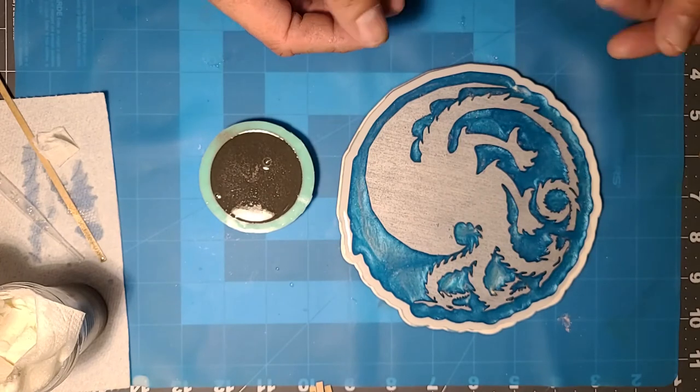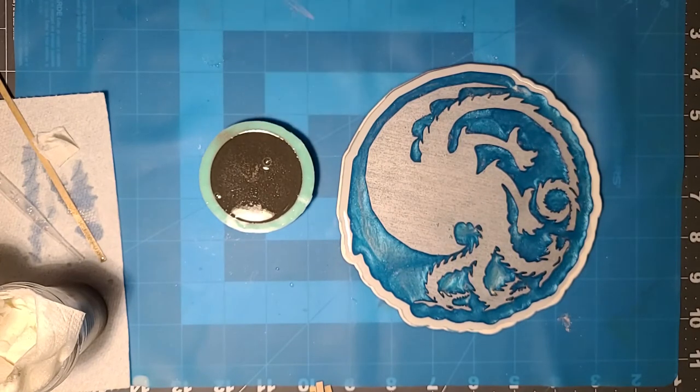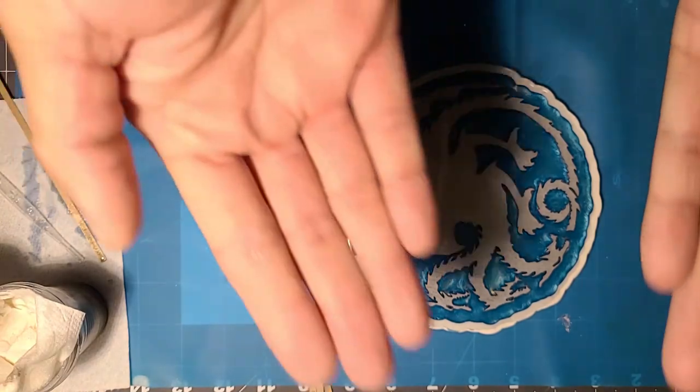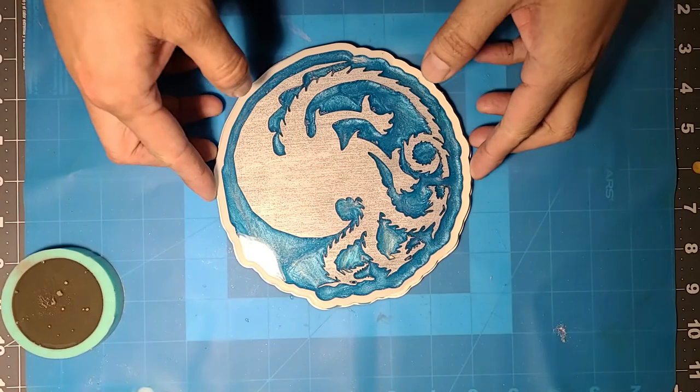So, I realize now I should have put another ring around it. Just to make it a little bit deeper. So, the stuff won't fall off the sides. That's alright.